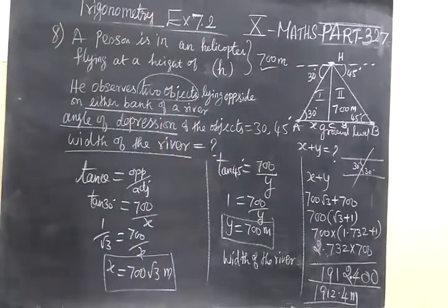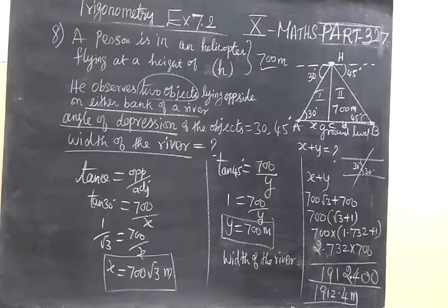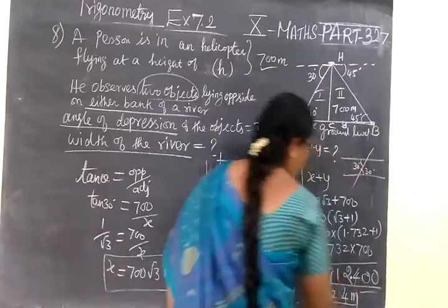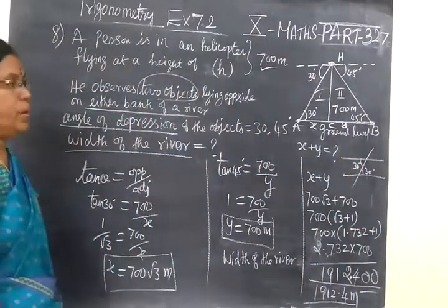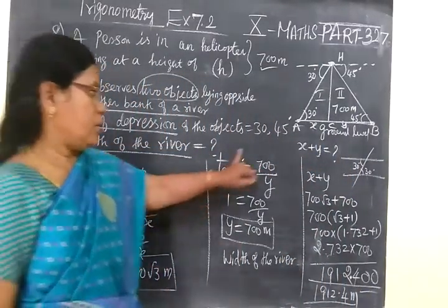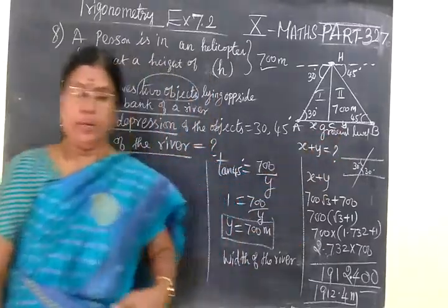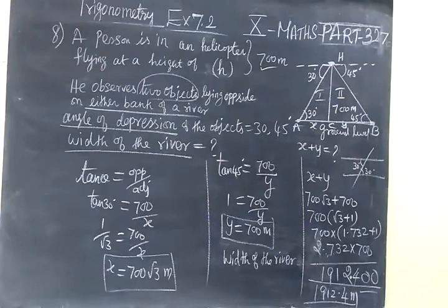So width of the river equal to answer which you get 1912.4 meter. So it is very simple sum. Either side of the river means you are finding x and y, then adding the river.